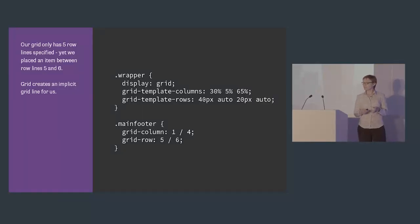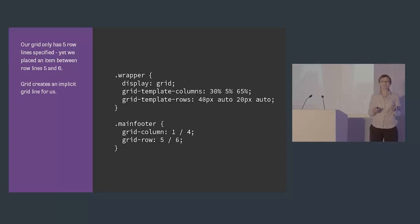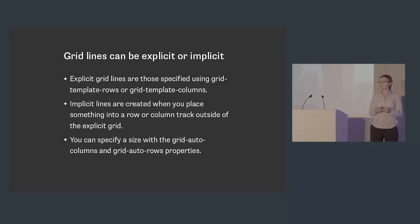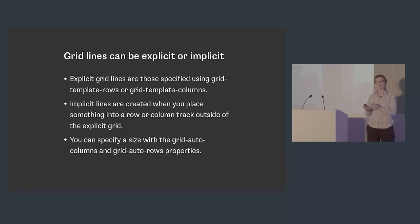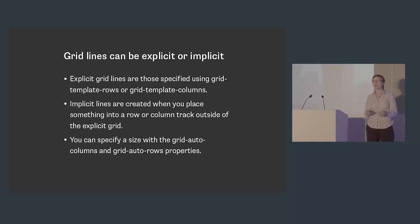You might have noticed that the row between lines five and six doesn't actually exist in the grid I defined at the beginning. Grid will create extra grid lines if you position something outside of what we call the explicit grid — the grid you've defined. Grid just creates extra lines to make the tracks needed to put that content in. They'll stretch to fit the content unless you specify a size with grid-auto-columns and grid-auto-rows. You can continue to add items at the bottom of your grid and grid will just cope, adding extra lines for you.